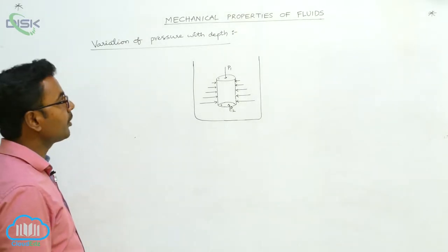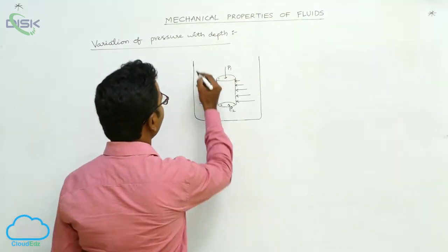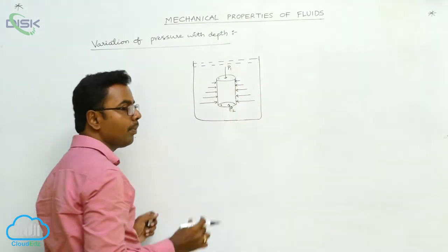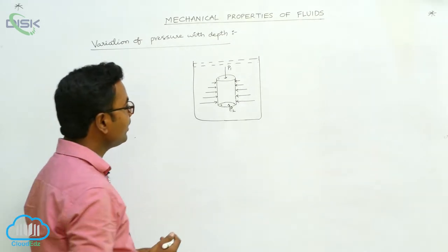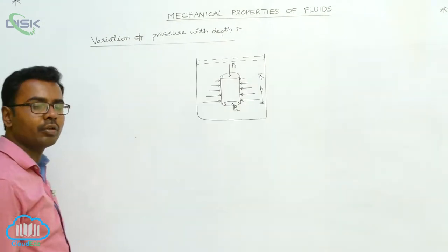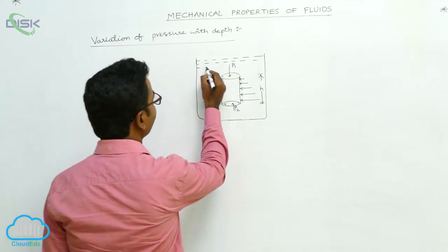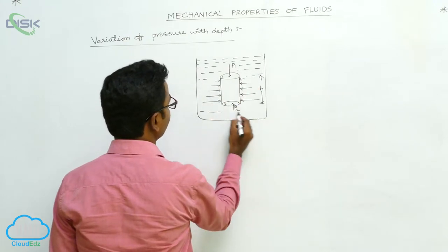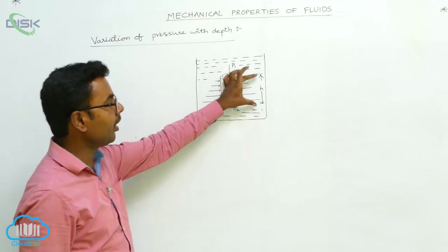Let us understand the variation of pressure with depth in a fluid. We consider a fluid in a container and examine an imaginary cylindrical part of the fluid inside it. This imaginary cylindrical part has a height h. We consider a container in which a liquid or fluid is present, and within it we identify this imaginary cylindrical part of height h.